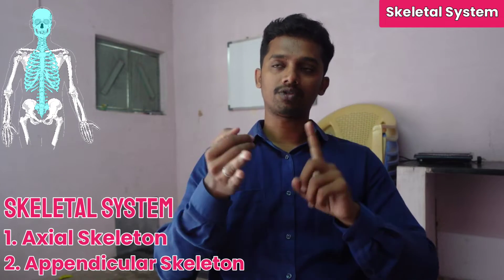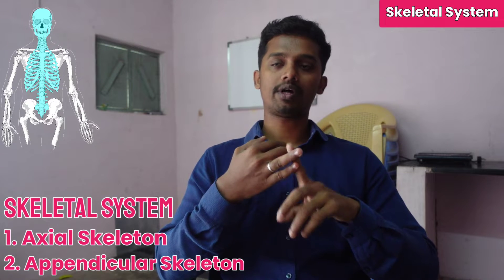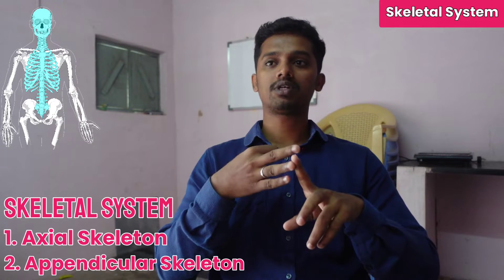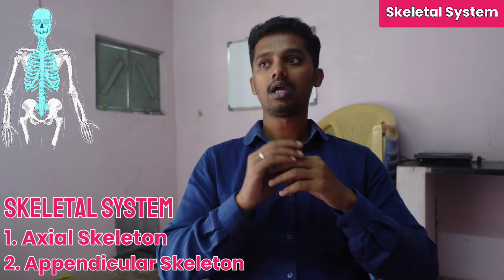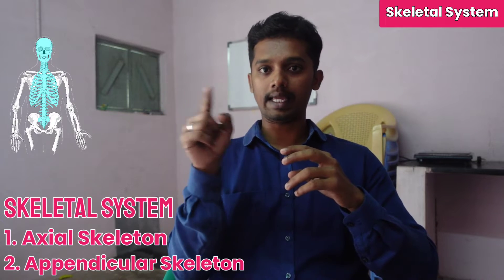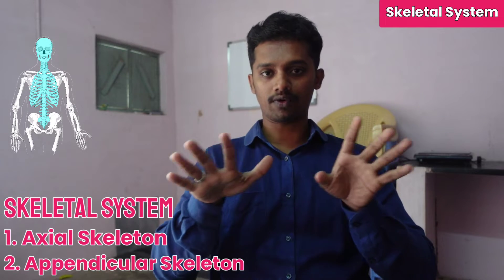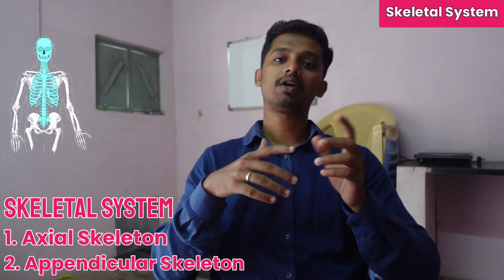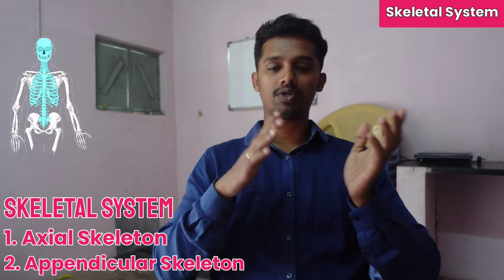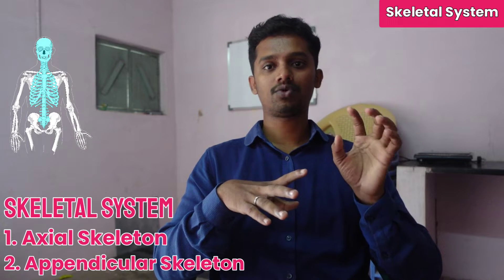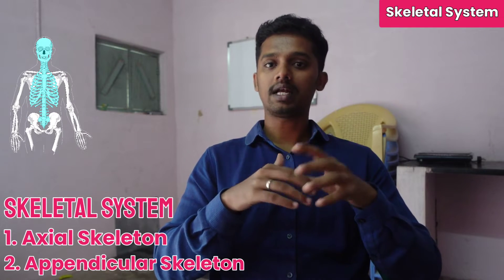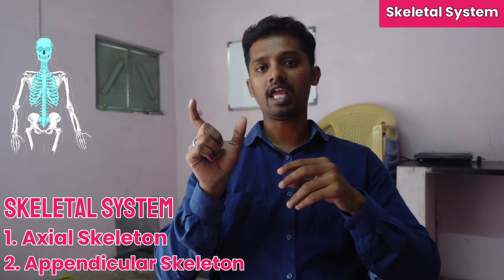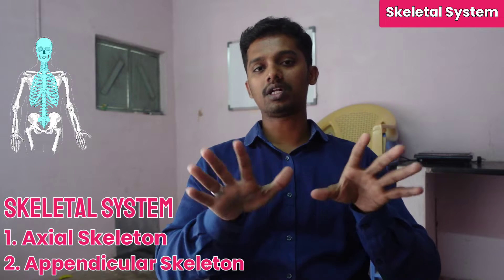The axial skeleton has 80 bones and the appendicular skeleton has 126 bones, making a total of 206 bones in the human body.